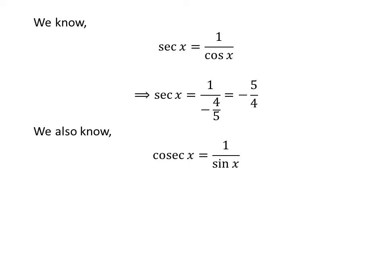We also know 1 upon sine of x is equal to cosecant of x. So cosecant of x is equal to 1 upon 3 upon 5, which is equal to 5 upon 3. Thus we find out the values of all other five trigonometric functions.